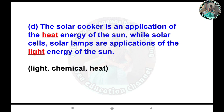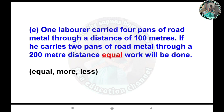E: One worker carried four pans of road metal through a distance of 100 meters. If he carries two pans of road metal through a 200 meter distance, equal work will be done.